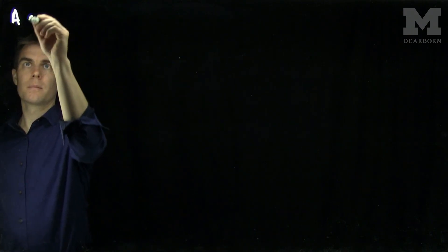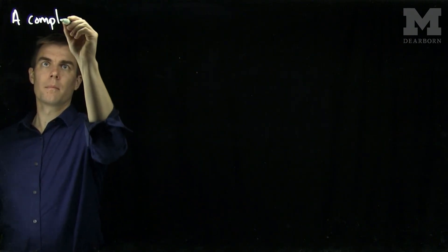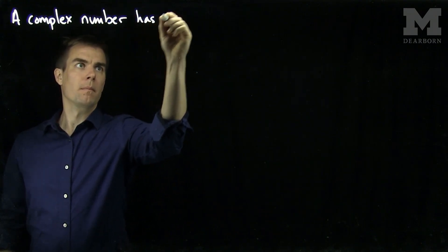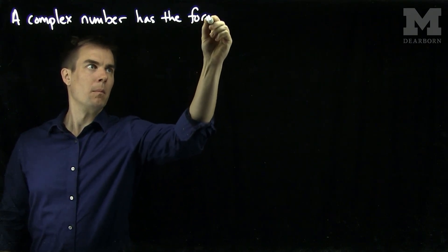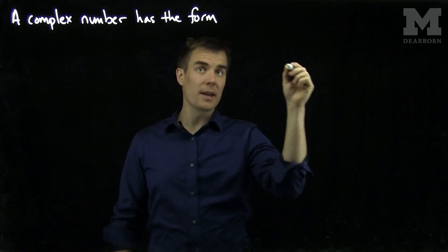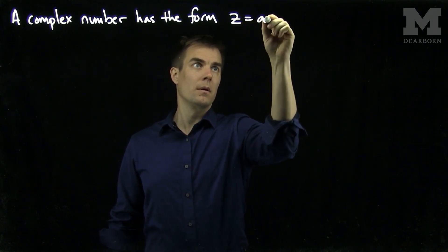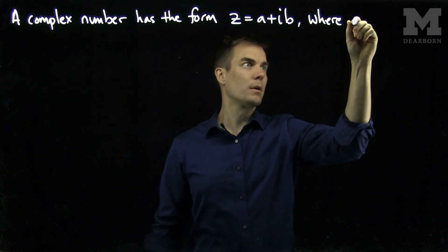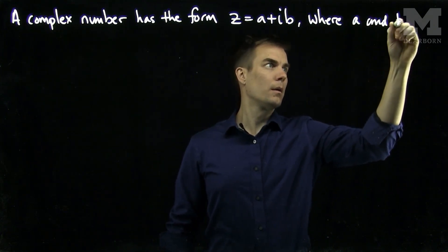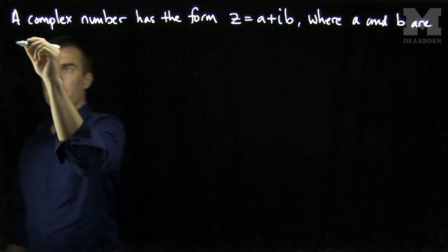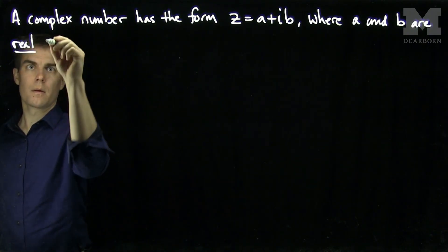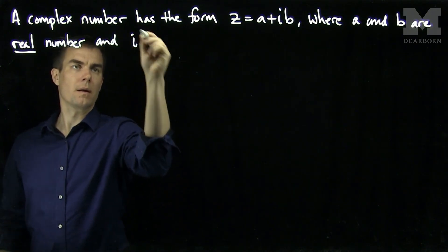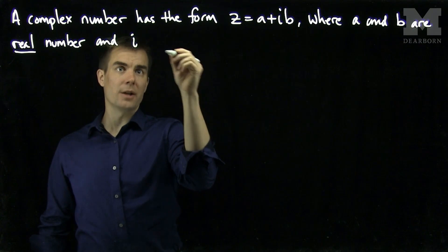A complex number has the form z equals a plus ib, where a and b are real numbers and i is a new number called the imaginary unit.